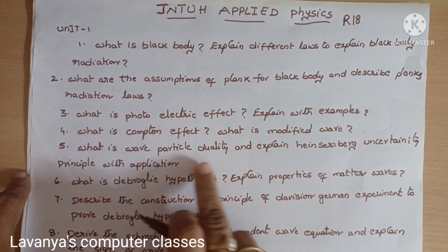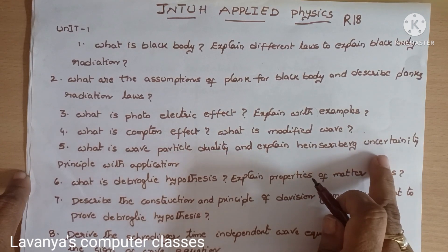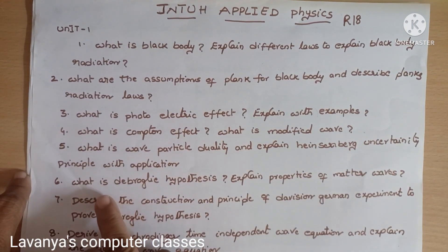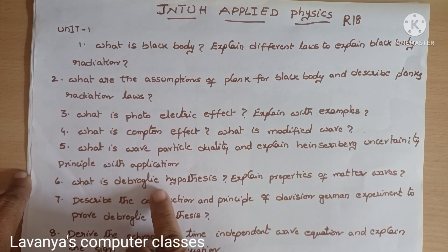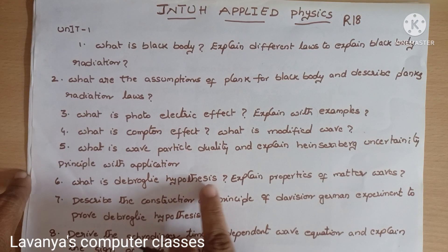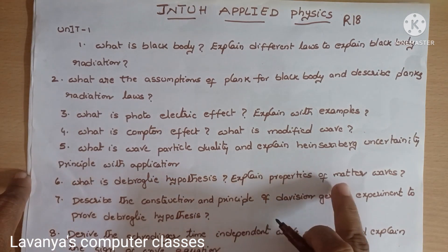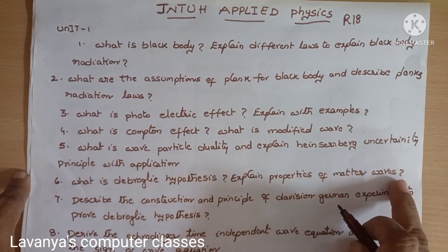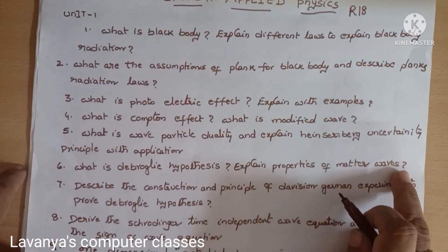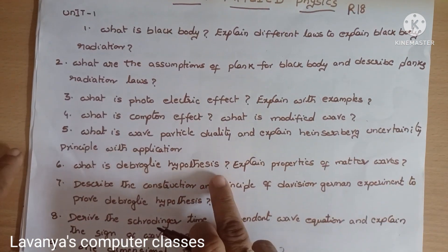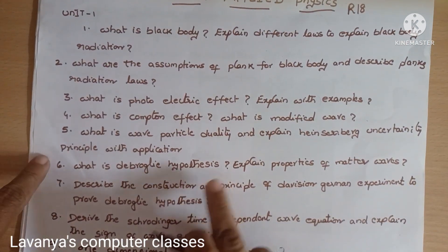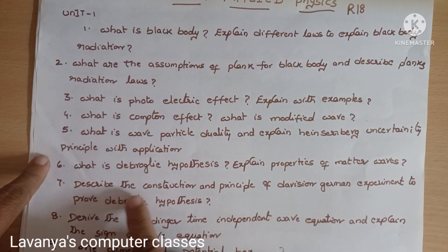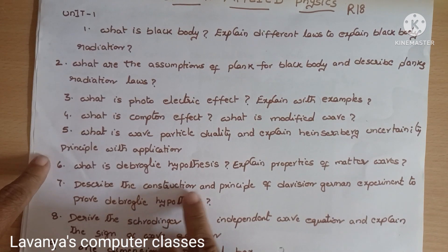Fifth question: what is wave-particle duality? Explain the Heisenberg uncertainty principle with applications — this is a very important question. Sixth question: what is de Broglie hypothesis? Explain its properties, i.e., properties of matter waves.